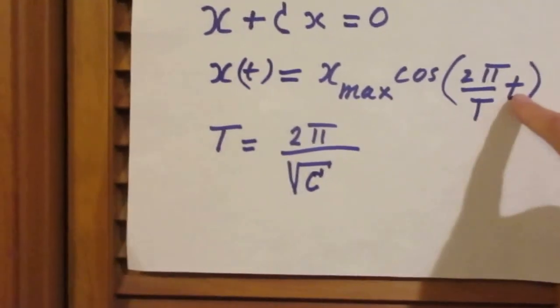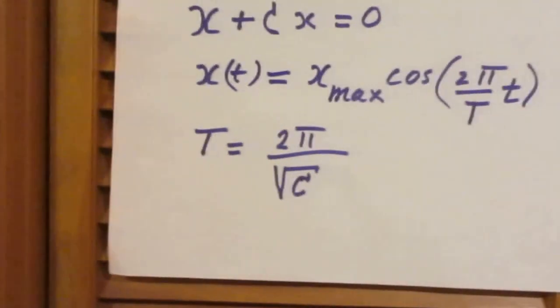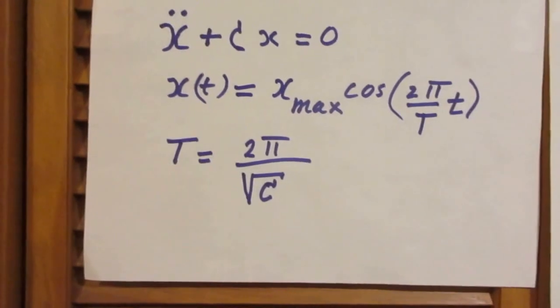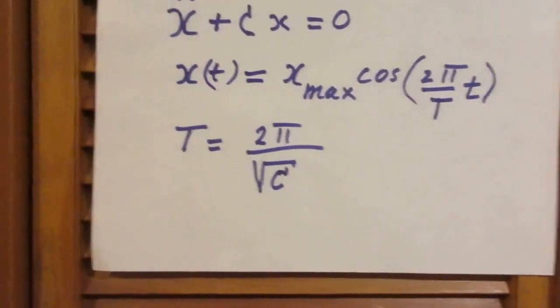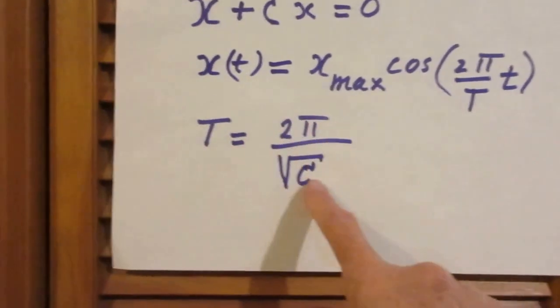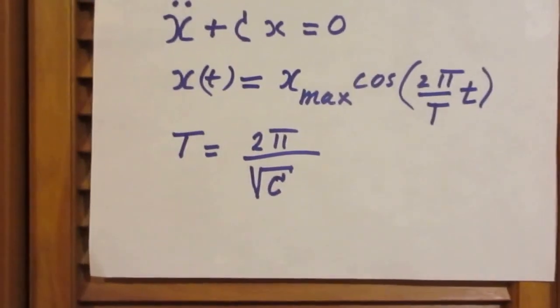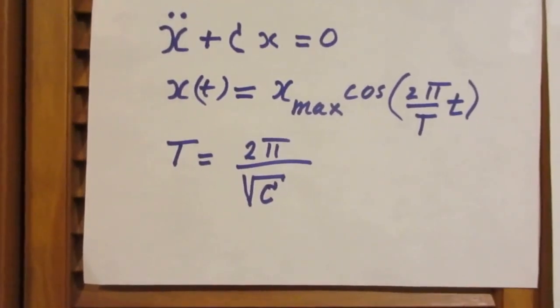If you substitute this result in the differential equation and you remember how to take second derivatives of cosine functions, you will immediately find that the period is 2pi divided by the square root of c. c has to be a constant, that's essential.